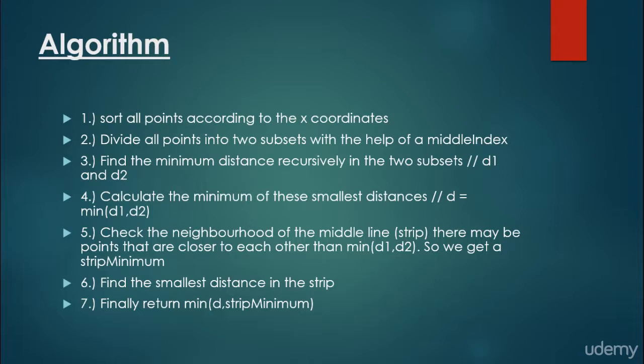When we get a strip minimum — we are going to see the illustration — we find the smallest distance in the strip. Finally, we return the minimum. We just have to calculate minimums over and over again, and this is the typical divide and conquer procedure.